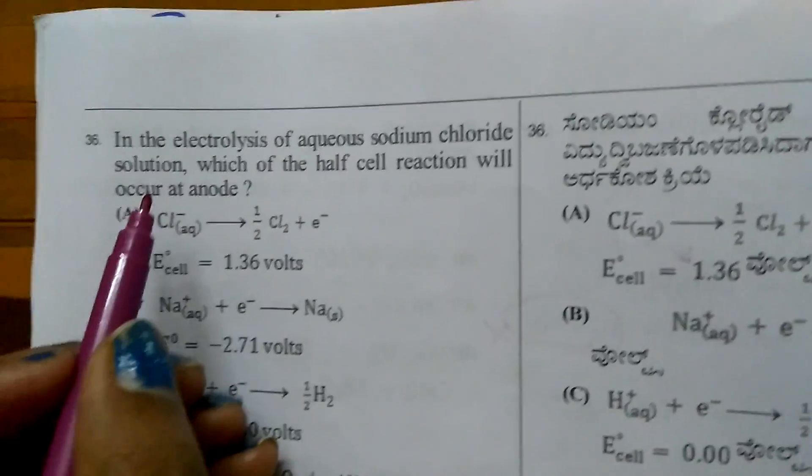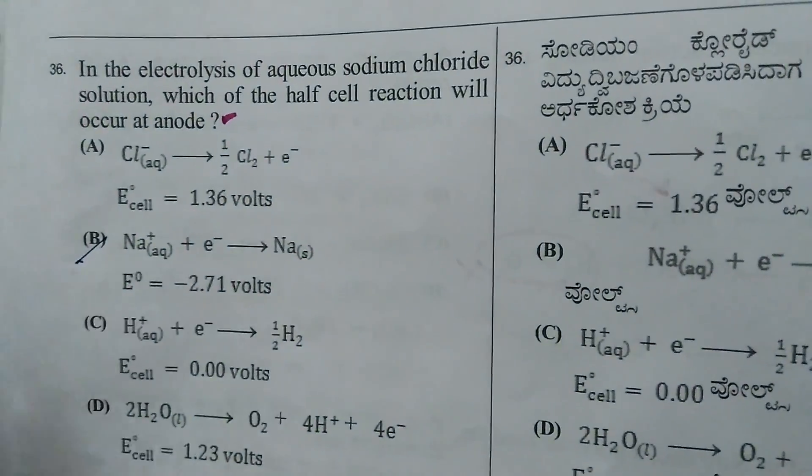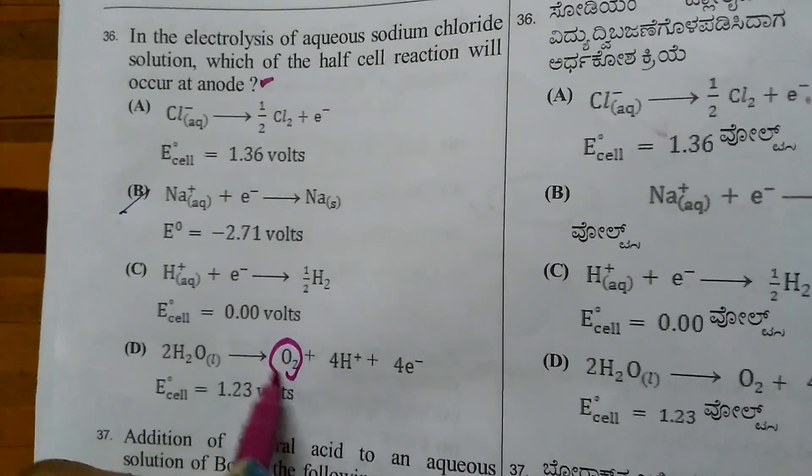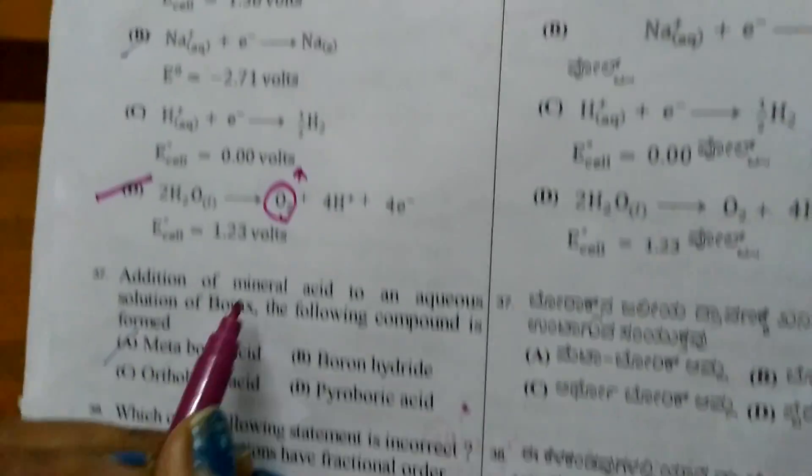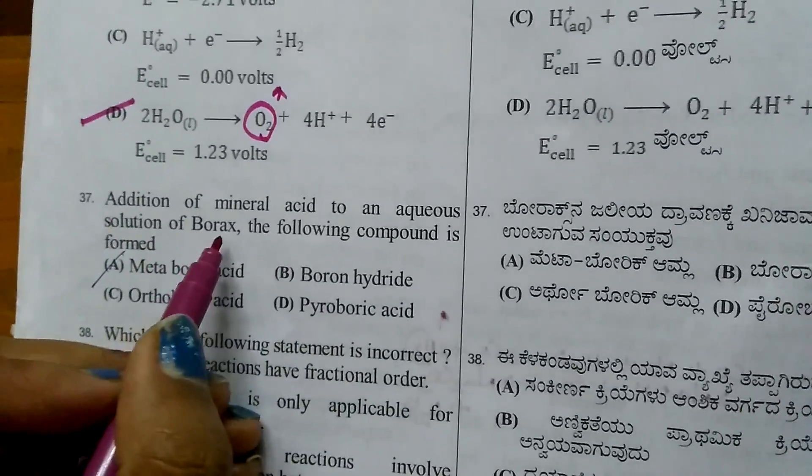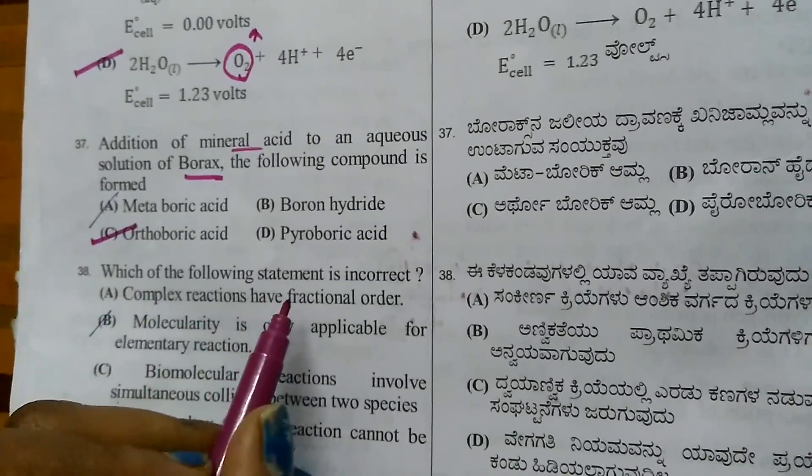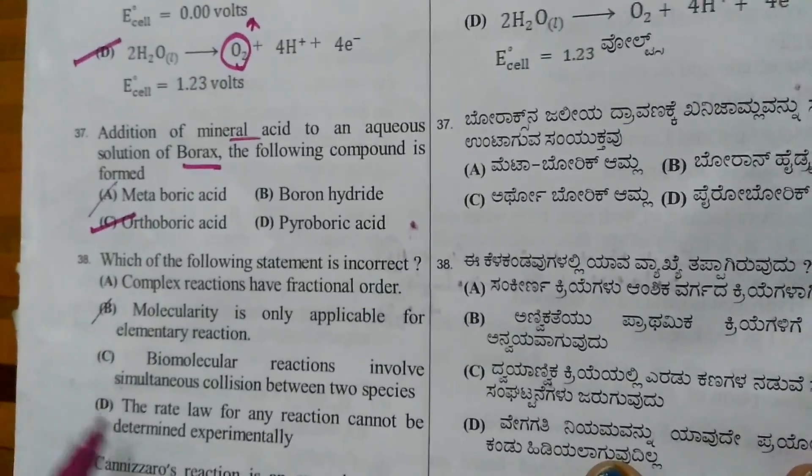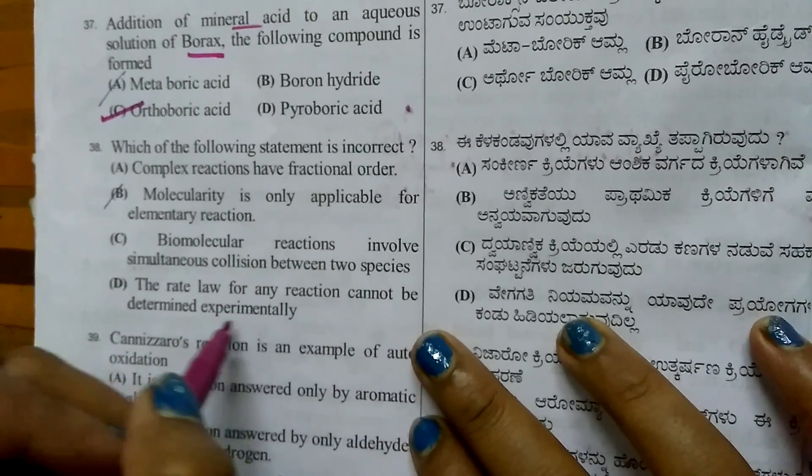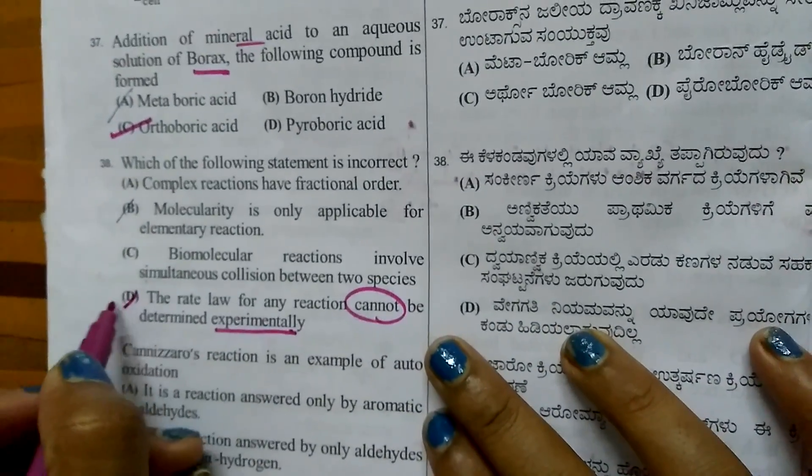Question 36: In electrolysis of aqueous sodium chloride, which half-cell reaction occurs at anode? At anode, oxidation takes place, resulting in release of oxygen gas. Question 37: Addition of mineral acid to borax forms ortho boric acid. Question 38: Which statement is incorrect? Rate law can be determined experimentally, but they say it cannot be determined experimentally, so this is incorrect.